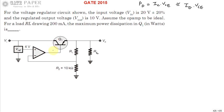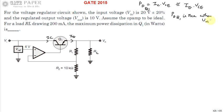In our question, Q1 is in the active region. In the active region, collector current and emitter current are approximately the same, so Ic ≈ Ie. Therefore Vce into Ie is the power dissipation across transistor Q1. This power dissipation PDQ1 is maximum whenever the input voltage is at maximum.